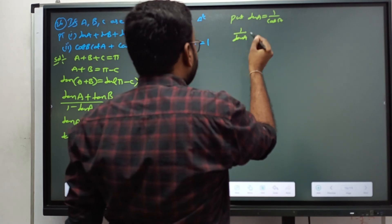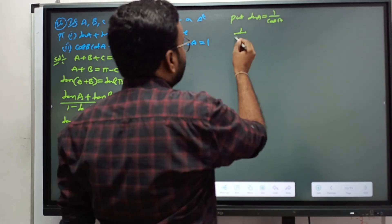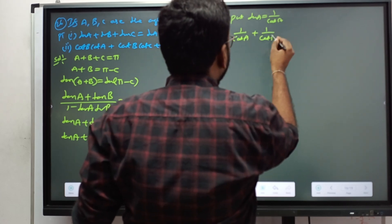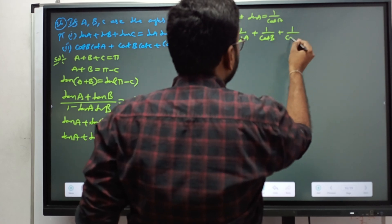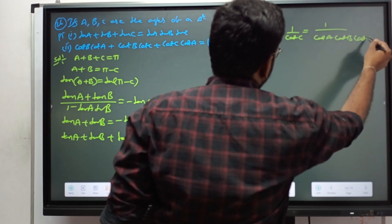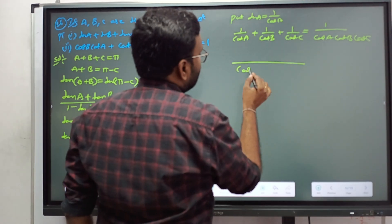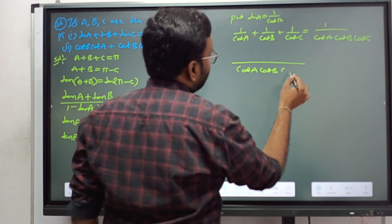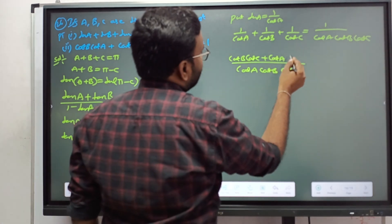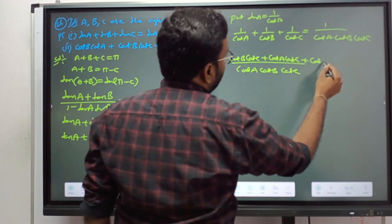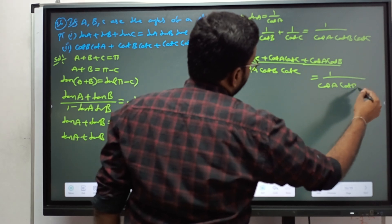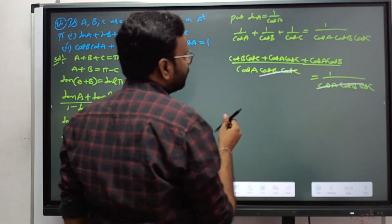After substitution, we get: 1/cot A + 1/cot B + 1/cot C = 1/(cot A · cot B · cot C). Taking LCM as cot A · cot B · cot C on the left side: the numerator becomes cot B · cot C + cot A · cot C + cot A · cot B. Setting this equal to 1 from the right side, we get the result.